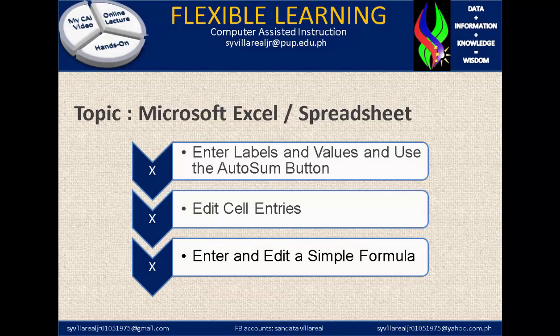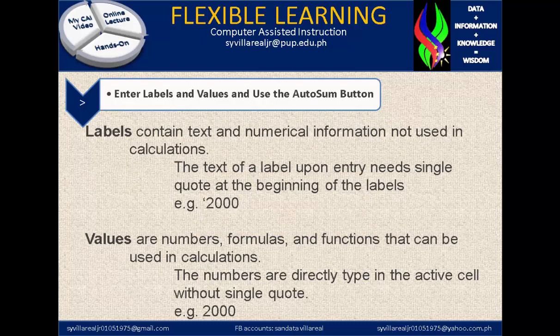Under this subtopic we have three: enter labels and values and use the autosum button; edit cell entries; and enter and edit a simple formula. Labels contain text and numerical information not used in calculations. The text of a label upon entry needs a single quote at the beginning of the label. For example, if you're going to type 2000, you need to put a single quote at the beginning of it, and that is considered to be a label.